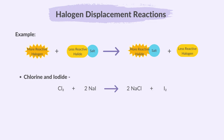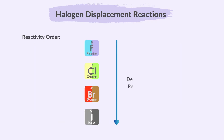For chlorine and iodide: chlorine is more reactive than iodine, so chlorine displaces iodine from sodium iodide, producing sodium chloride and iodine gas. In the case of bromine and iodide: bromine is more reactive than iodine, so bromine displaces iodine from sodium iodide, forming sodium bromide and iodine gas.